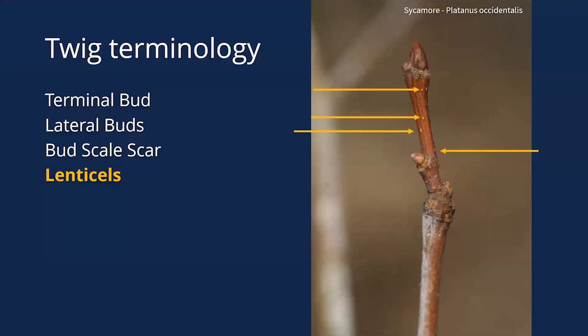The little dots on twigs are lenticels. Sometimes the color of the lenticels, the amount of them, and whether they're raised or not can help you identify a tree. Lenticels actually serve a purpose — they're used in gas exchange through respiration in the twig. Some twigs have very large noticeable lenticels, some have none whatsoever, and anywhere in between.